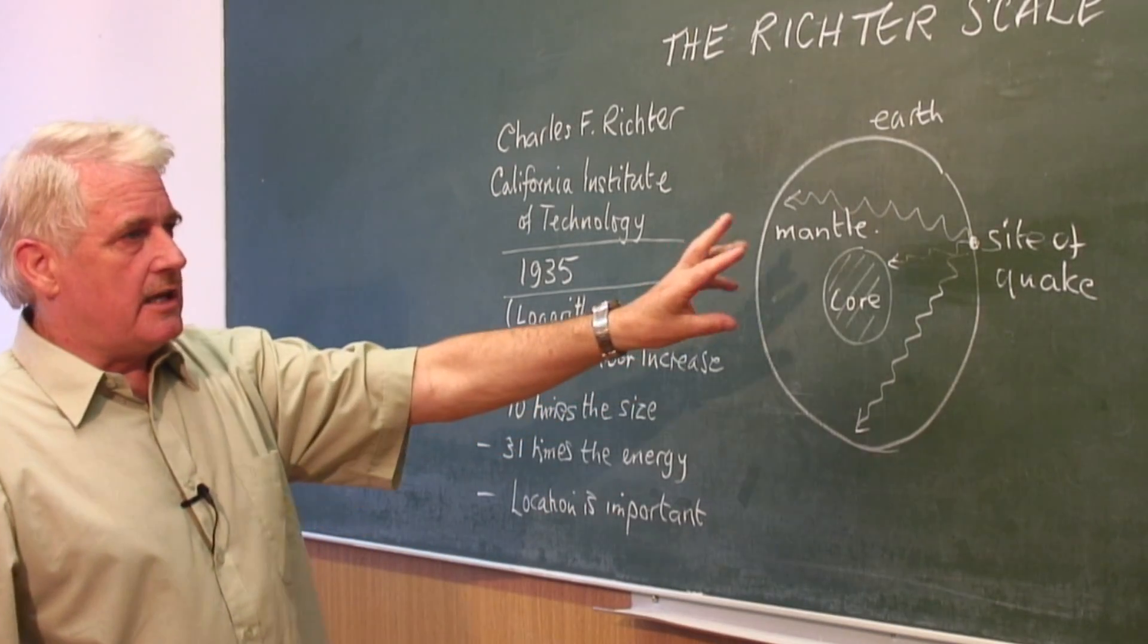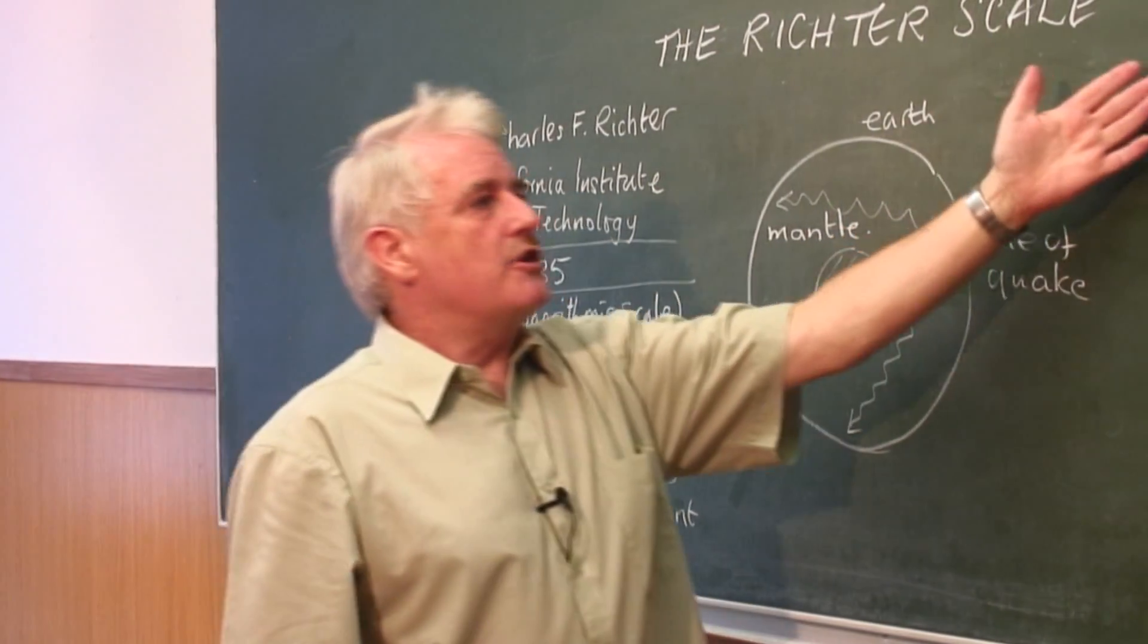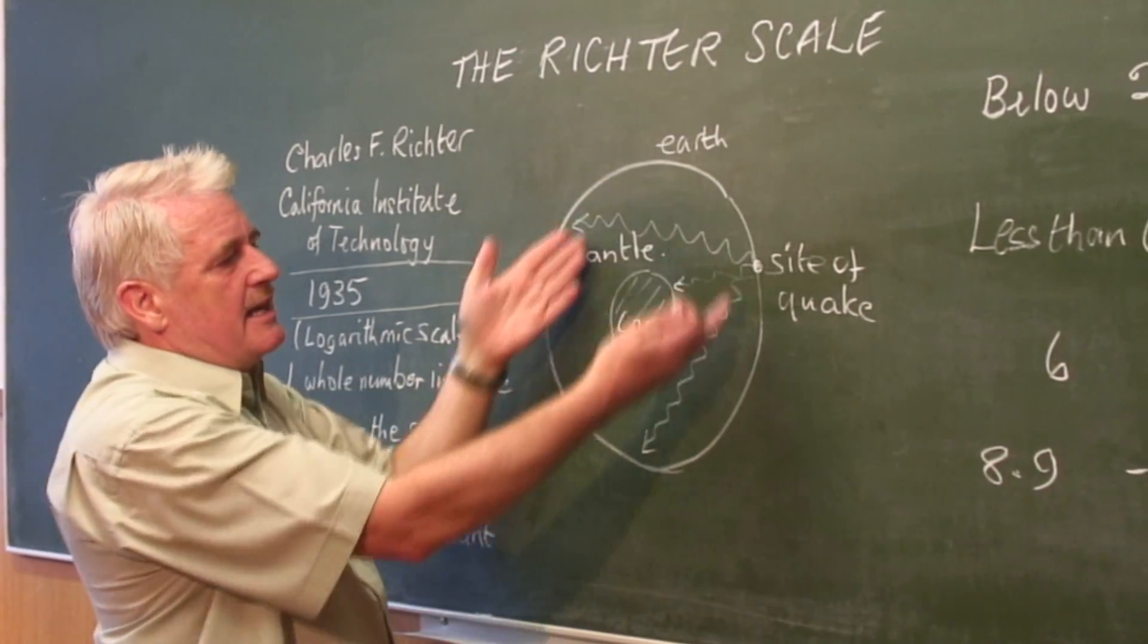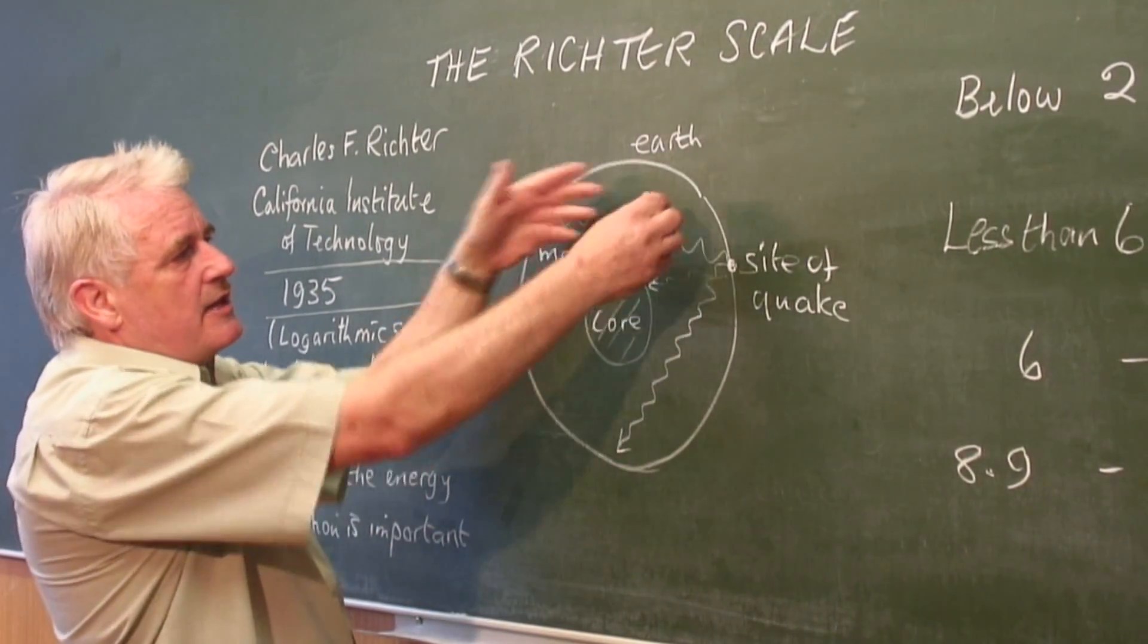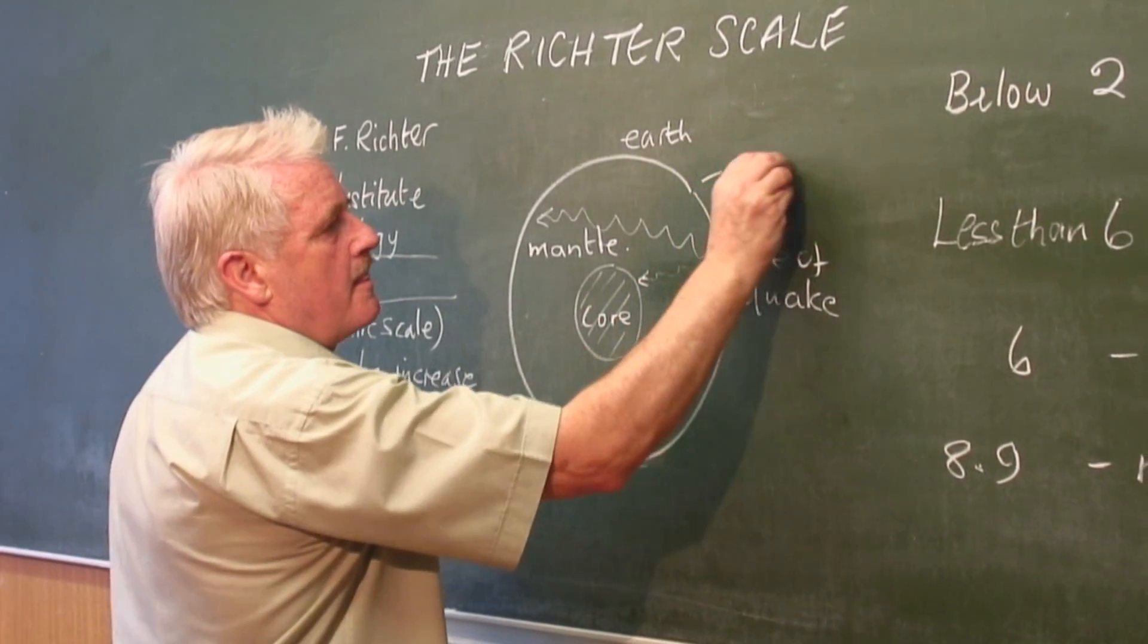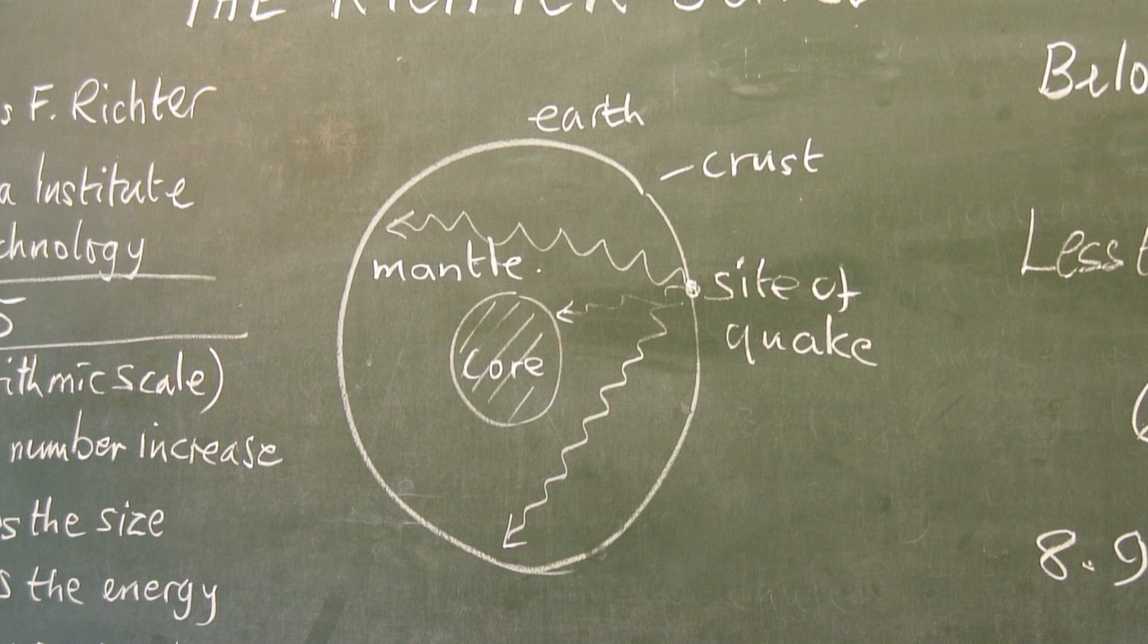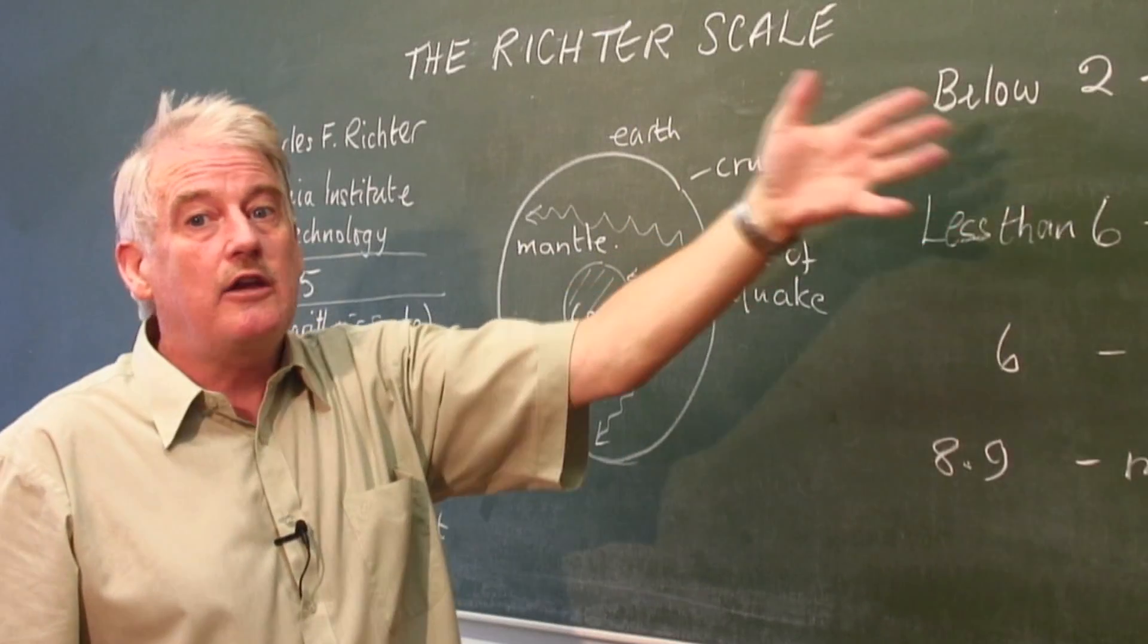Now obviously, for very small earthquakes, which take place all the time, there are movements in the mantle and in the crust. This is called the crust. For these, mostly below two, they're almost undetectable and they are called, therefore, microquakes.